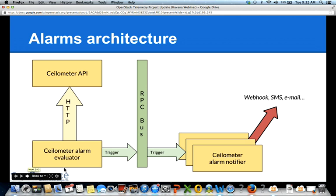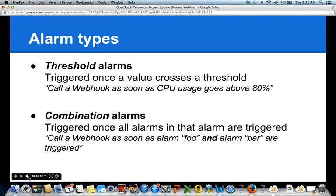There are different types of alarms: threshold alarms, which are the simple ones where you trigger something when a metric crosses a threshold, like CPU usage above a certain level; and combination alarms, which are logical combinations — for example, triggering an action when this alarm AND that alarm are both active, or using OR logic. This is based on a standard publish-subscribe architecture, so nothing new was invented there.